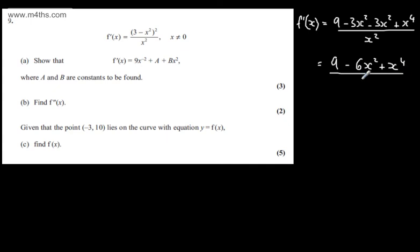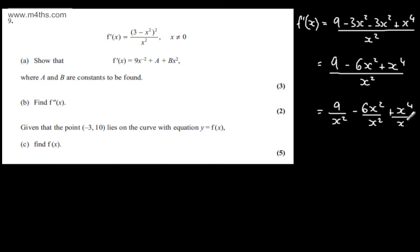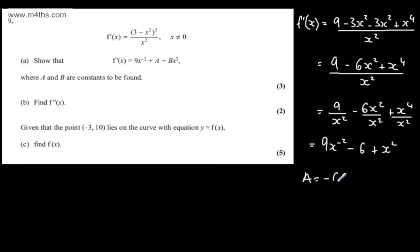I'm now going to split the numerator and write this as 9 over x squared, minus 6x squared over x squared, plus x to the 4th over x squared. Using the rules of indices, 1 over x squared is x to the minus 2, so we can write 9x to the minus 2. The x squareds cancel, leaving minus 6, and x to the 4th divided by x squared gives plus x squared. So a equals minus 6 and b equals 1.